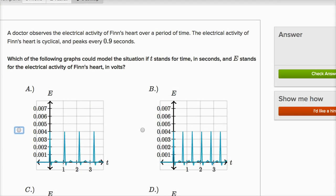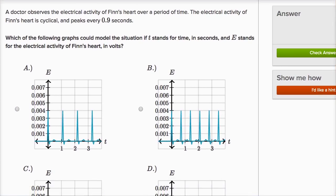So here we have a doctor observes the electrical activity of Finn's heart over a period of time. The electrical activity of Finn's heart is cyclical, as we hope it would be, and it peaks every 0.9 seconds. Which of the following graphs could model the situation if t stands for time in seconds, and E stands for the electrical activity of Finn's heart in volts?